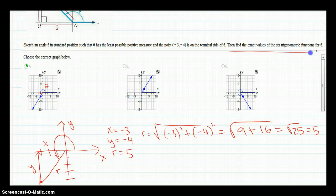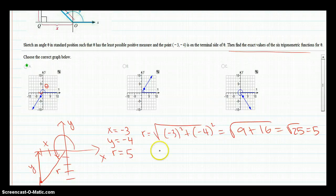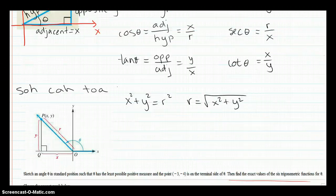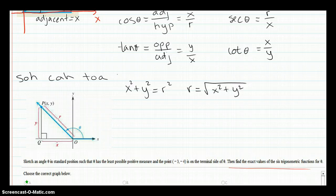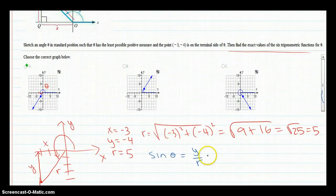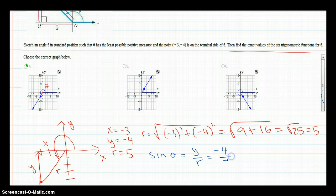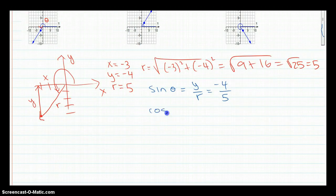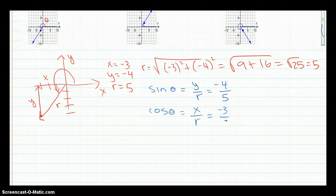So finally, they ask you to find the exact value of six trig functions. So we know that sine of theta, by definition, is y over r. If you look above, there it is. So we know that that would be negative 4 over 5. Cosine of theta, by definition, is x over r, which is negative 3 over 5.